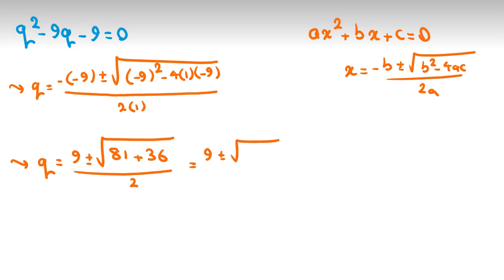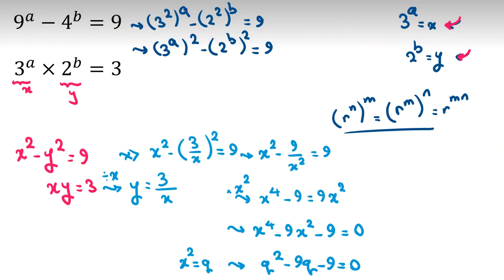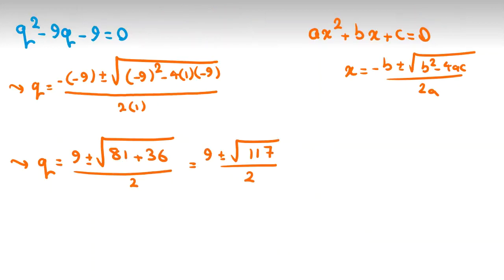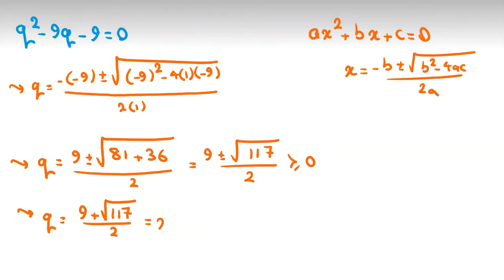So Q equals (9 plus or minus square root of 117) over 2. Since Q was X squared, it must be at least 0. If we select the negative sign, Q would be negative, so we must take Q equals (9 plus square root of 117) over 2. Now X equals plus or minus square root of (9 plus square root of 117) all over 2.